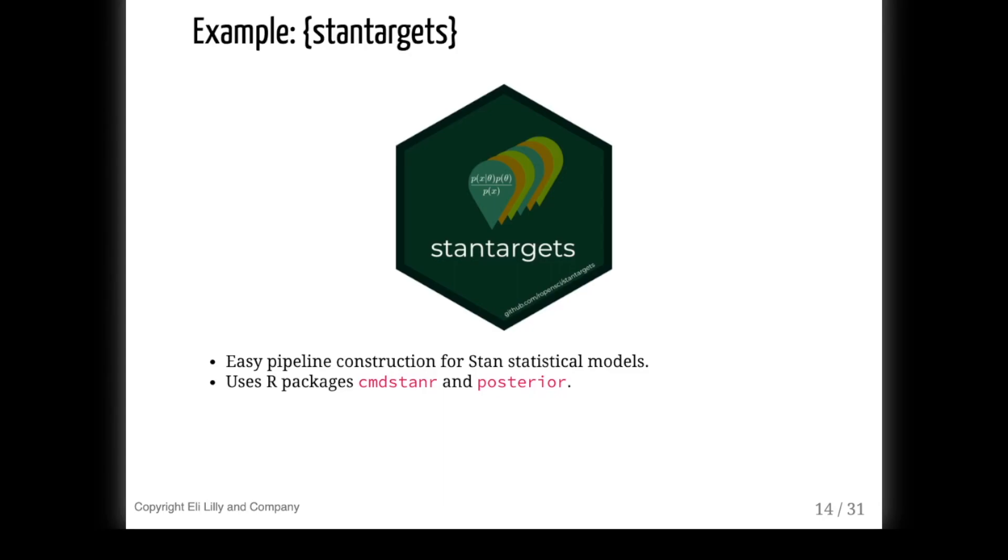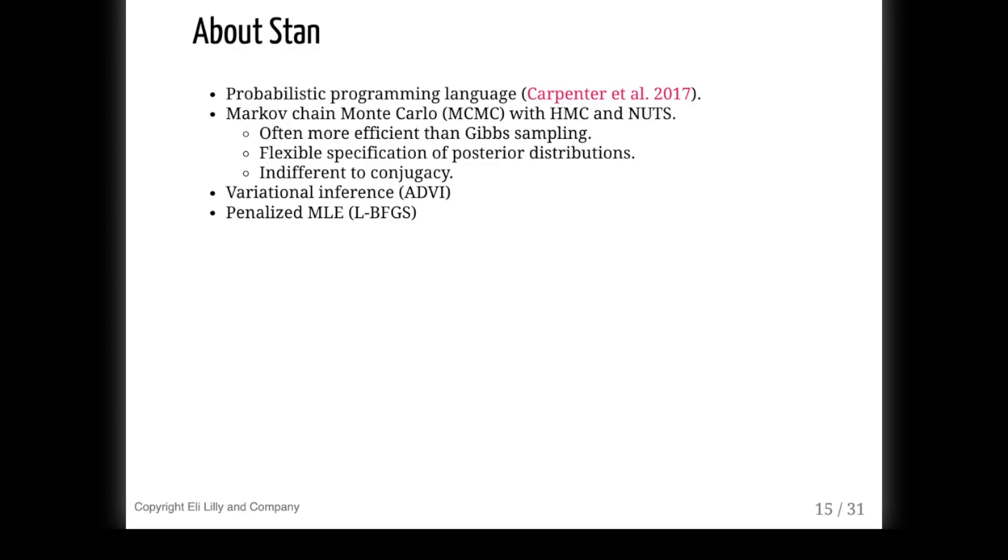The stan targets package leverages this idea for Bayesian data analysis with Stan. It has target factories from single-run workflows to large-scale simulation studies. If you use R and you use Stan, stan targets is worth trying out. A bit of background: Stan is a probabilistic programming language for all kinds of statistical modeling. It's most famous for Hamiltonian Monte Carlo and the No-U-Turn Sampler to fit Bayesian models, but it also supports variational inference and optimization. It can be really fast, but as with anything Bayesian, it inevitably comes with a non-trivial computational burden, which is exactly where targets and stan targets can help.